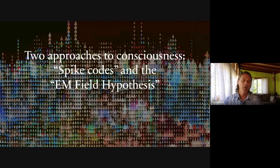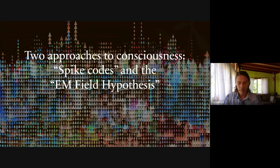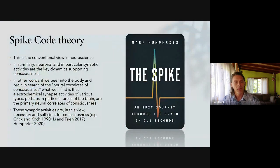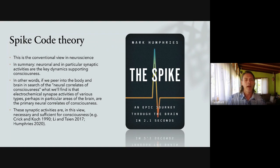Our theory of consciousness, the GRT theory — General Resonance Theory — is a species of EM field theories because it suggests, and certainly it's a suggestion at this point, that consciousness is largely an EM field phenomenon at various scales in the mammalian brain. I'm going to start by comparing the spike code approach, which is the prevailing approach in neuroscience today, to the EM field hypothesis. Spike code theory is pretty familiar to most of us in philosophy and neuroscience — it's just the idea that our brain operates primarily through neural spiking activity.